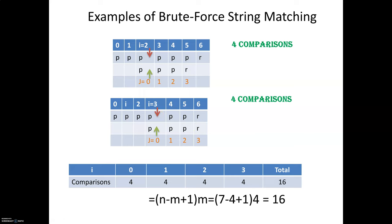To summarize: when i equals 0, four comparisons; i equals 1, four comparisons; i equals 2, four comparisons; i equals 3, four comparisons — totaling 16 comparisons. In general, if there are n characters in the text and m characters in the pattern, the total number of comparisons in the worst case is (n - m + 1) × m, which in this example equals 16.